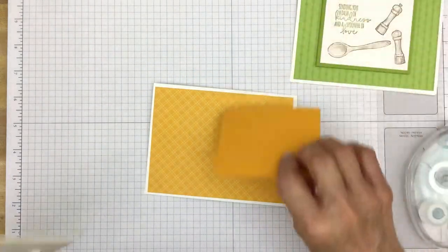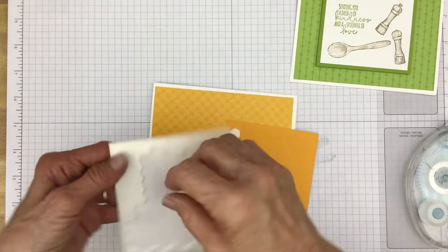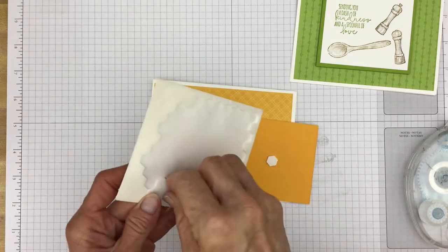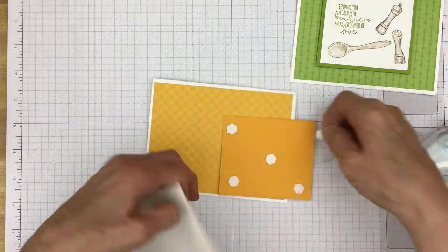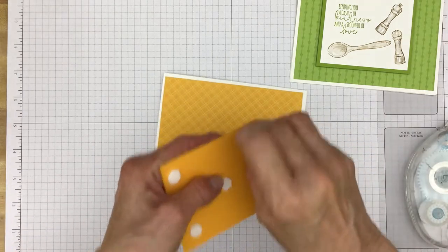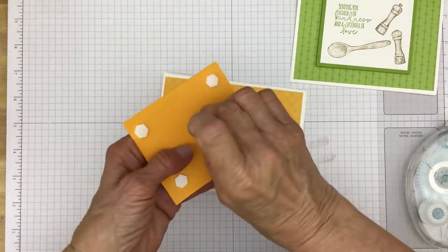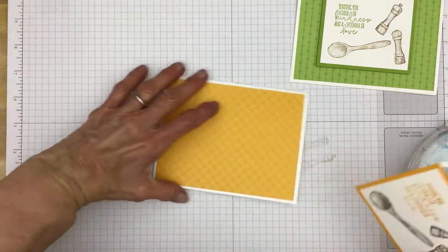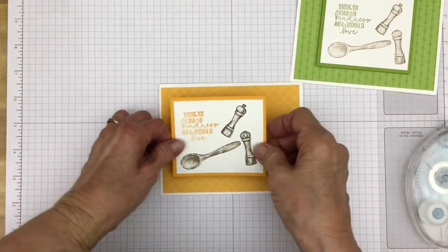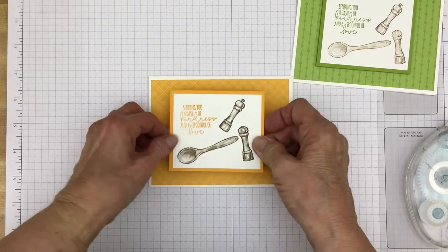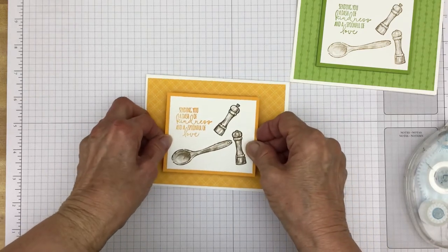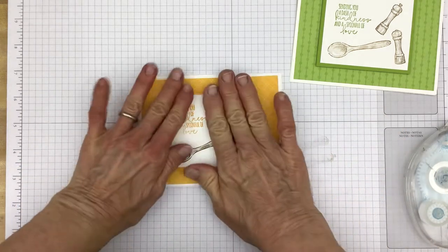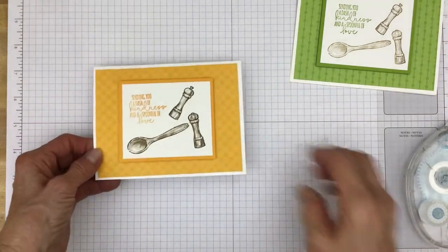And there we go. And we'll use a few dimensionals to put this on our card front. Take these backings off. And get this centered as best as we possibly can. Lay it down real carefully. Yeah, I'm happy with that. There we go. Quick and easy card.